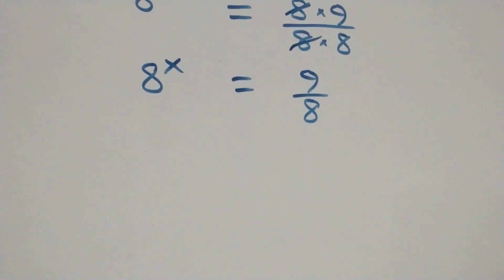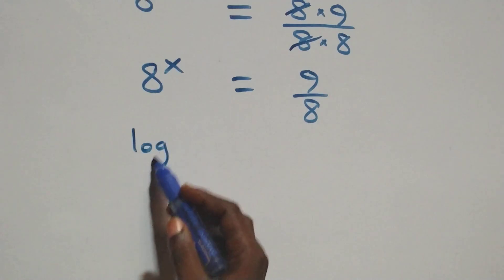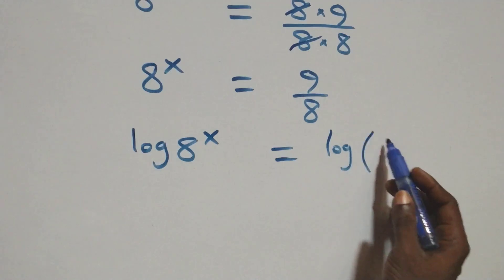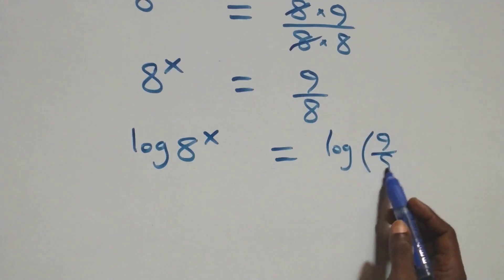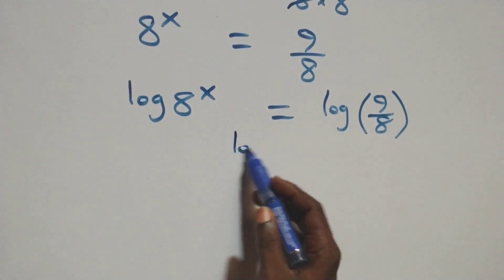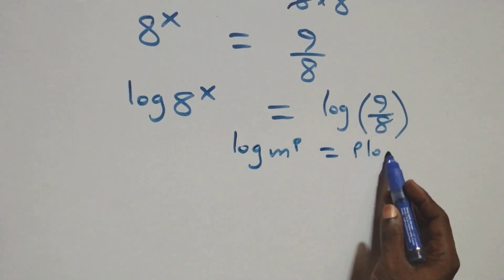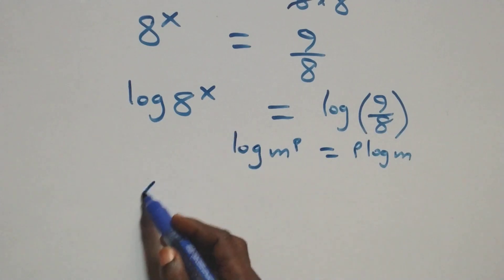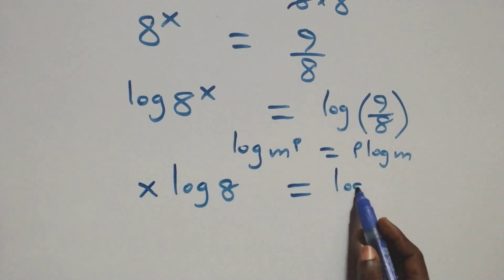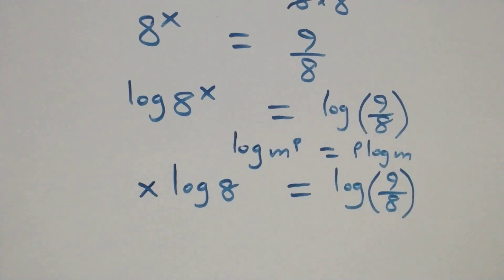Next, we take the log of both sides: log of 8 raised to power x equals log of 9 over 8. We then apply the power rule of logarithms, where log of m raised to power p equals p times log m. So this becomes x times log 8 equals log of 9 over 8.